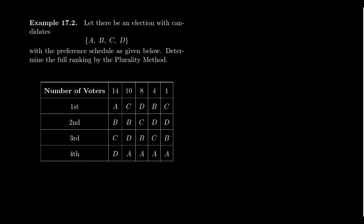Imagine we have an election with four candidates — A, B, C, and D — in which case we will look at their complete preference schedule. So that is, we see all of the voters' preferences. That helps us analyze things in this election. 14 people voted for candidate A as their top choice, then B, then C, then D — so 14 people preferred alphabetical order.